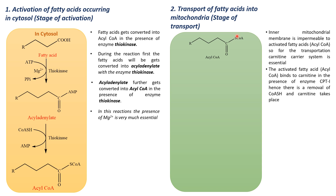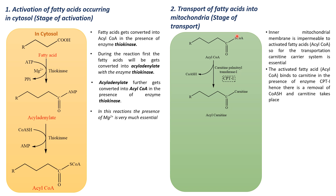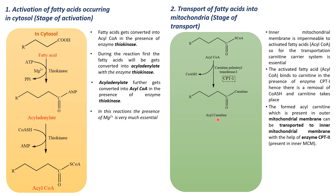The activated fatty acid — acyl coenzyme A — binds to the enzyme carnitine palmitoyl transferase 1, or CPT-1. When acyl coenzyme A binds with CPT-1, coenzyme A (CoASH) is removed and an intermediate compound called acyl carnitine is formed. This acyl carnitine is present at the outer mitochondrial membrane and then undergoes reaction in the presence of CPT-2, carnitine palmitoyl transferase 2.